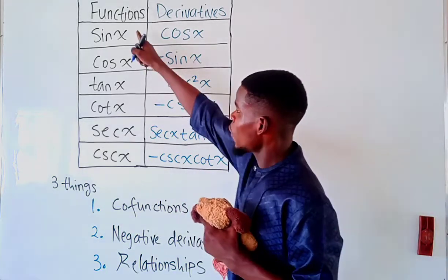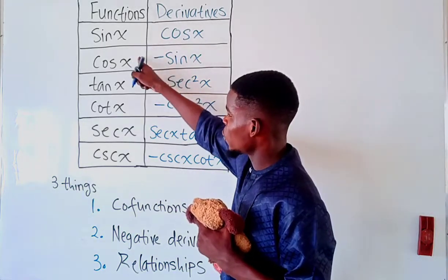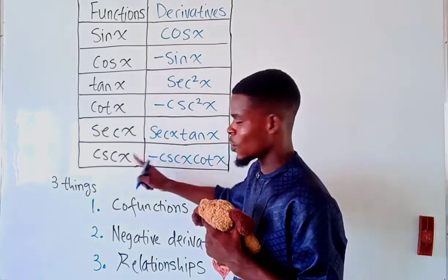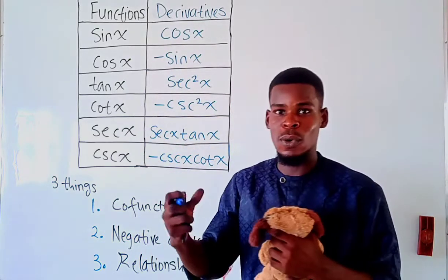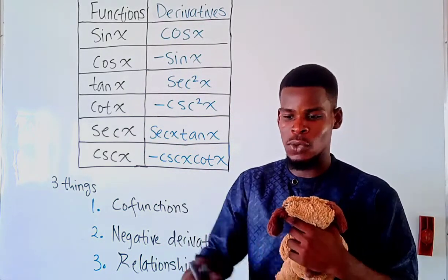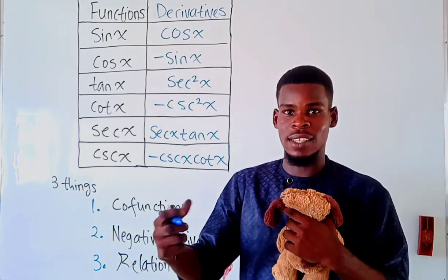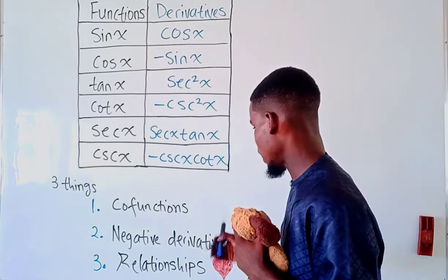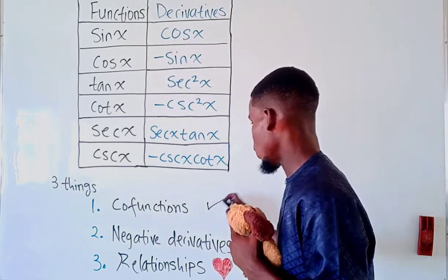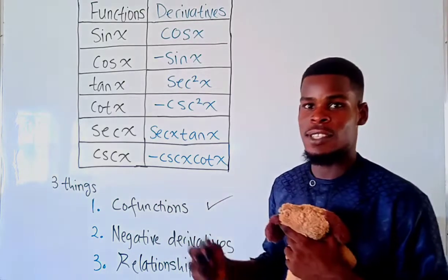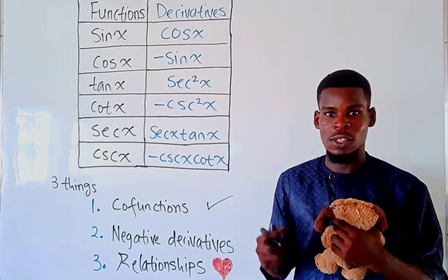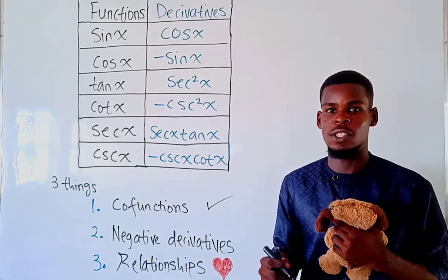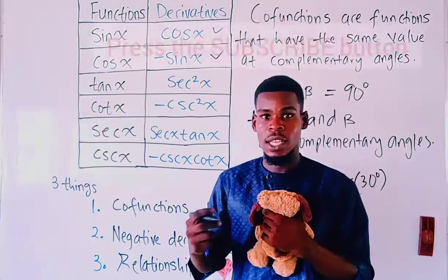Why do we have sine/cosine, tangent/cotangent, and secant/cosecant? Why the 'co'? That is what we mean by co-functions. Let me give you a definition for that.